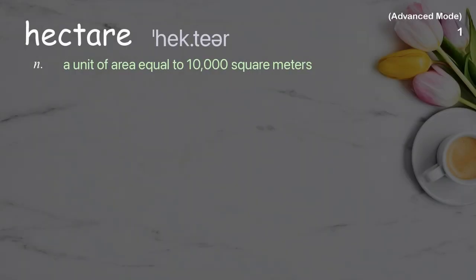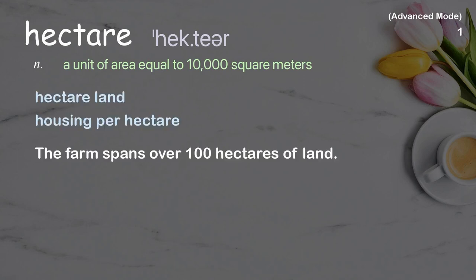Hectare: a unit of area equal to 10,000 square meters. Examples: hectare land, housing per hectare. The farm spans over 100 hectares of land.